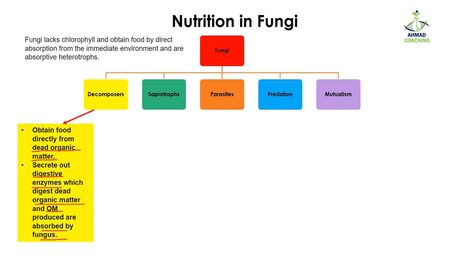In this way, fungi get their nutrition from dead organic matter or dead bodies. This is the reason that after some time, the dead bodies of plants or animals disappear — because the decomposers digest them and take their nutrients for their own benefit.